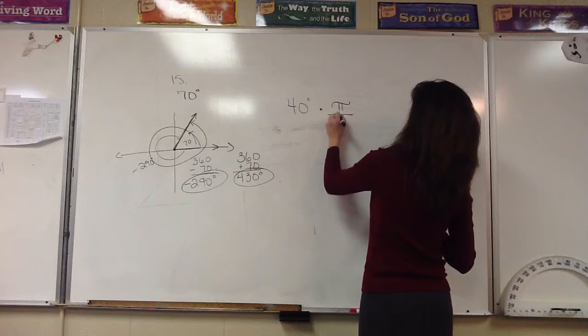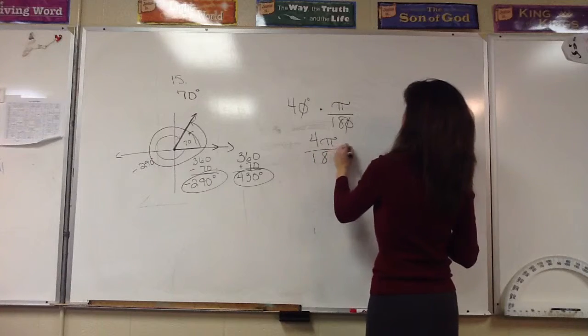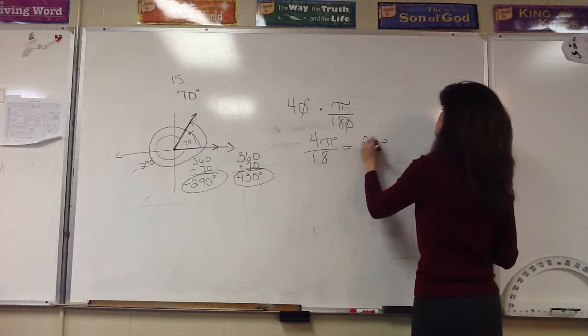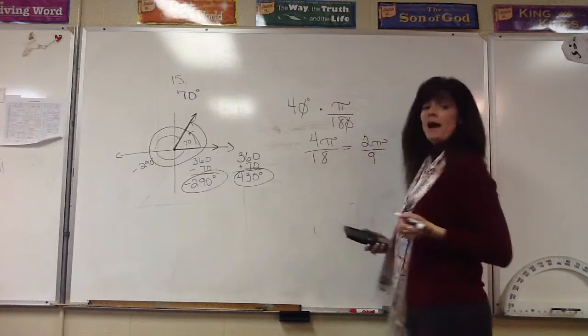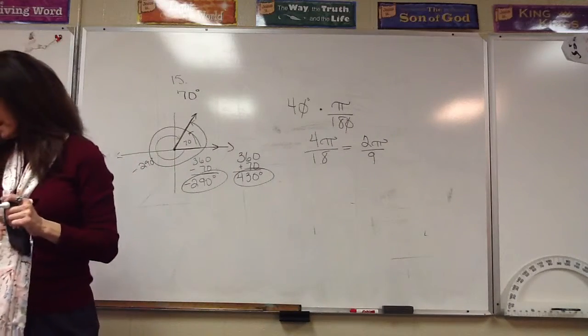So we're just simply going to put it over 180. Our answer here is going to be 4 pi over 18, and of course, we would reduce that down to 2 pi over 9 radians.